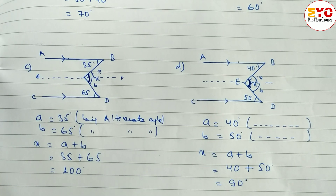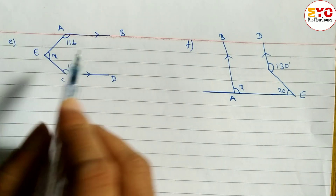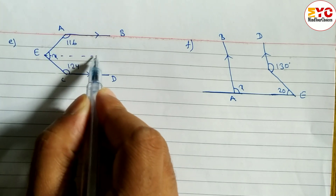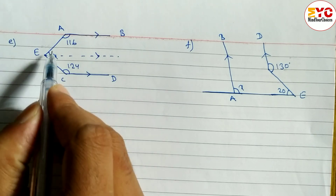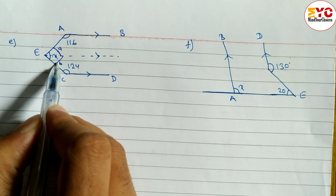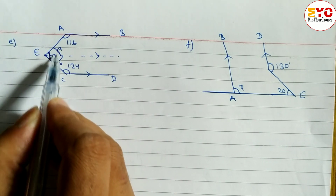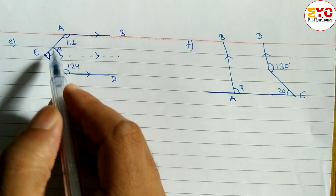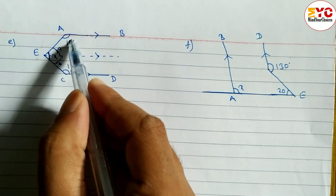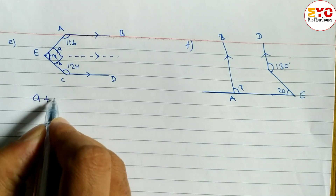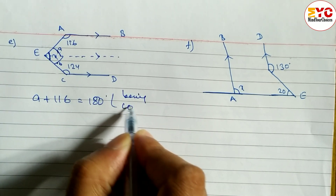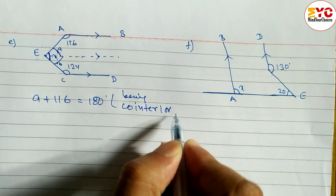Now look at next question number e. You can see here two lines are parallel — AB and CD are parallel. We draw one more parallel line. Let upper part be A and lower part be B. So x is equal to A plus B. To find out A: both angles are inside of the two parallel lines, so the relation is co-interior. We can write A plus 116 is equal to 180 degrees. Reason: being co-interior angle.